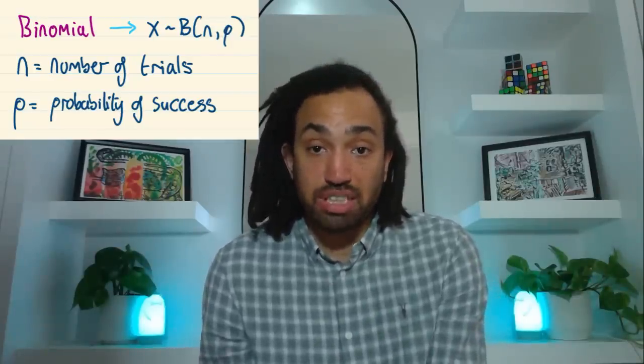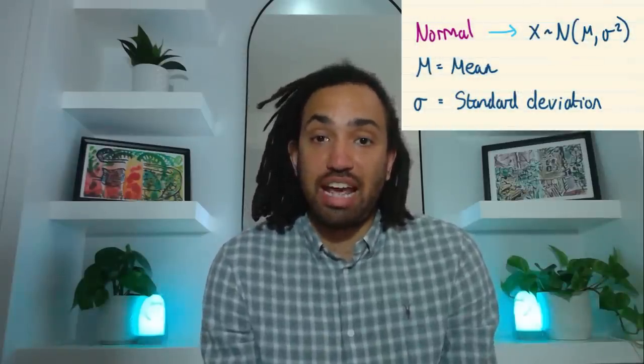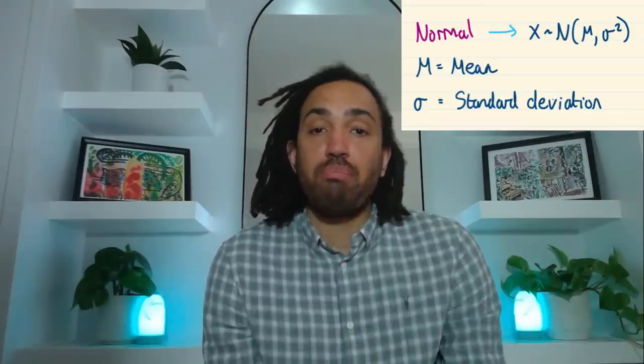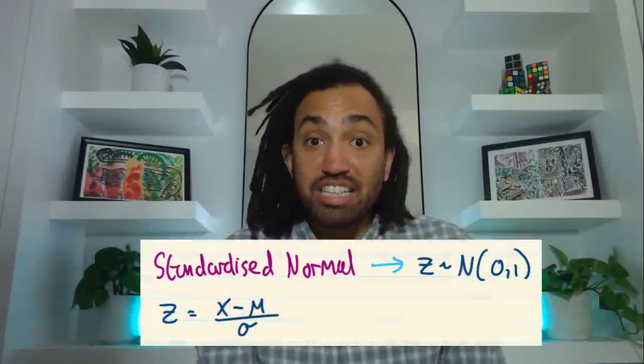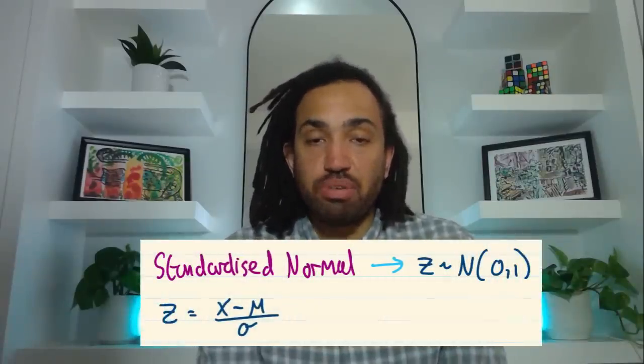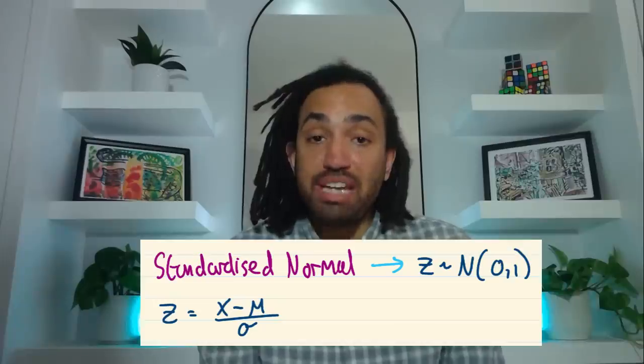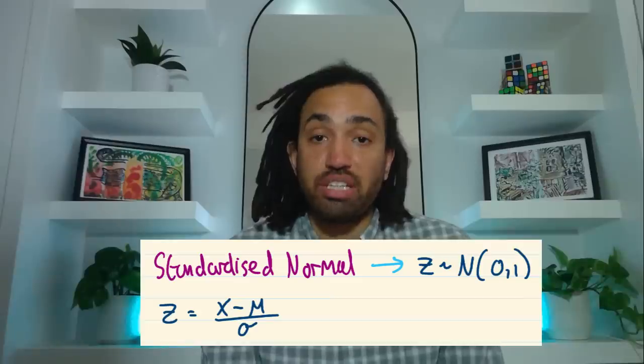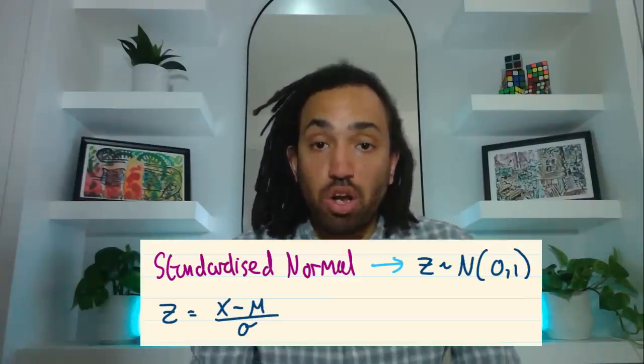Next one is the normal distribution and that is notated N open brackets mu sigma squared where mu is the mean and sigma is the standard deviation. Next one is the standardized normal or the Z distribution and this is notated that it's a normal distribution but the mean is zero and the standard deviation is one and the formula that we need to know in order to convert between Z and X values is that Z is equal to X minus mu all over sigma.